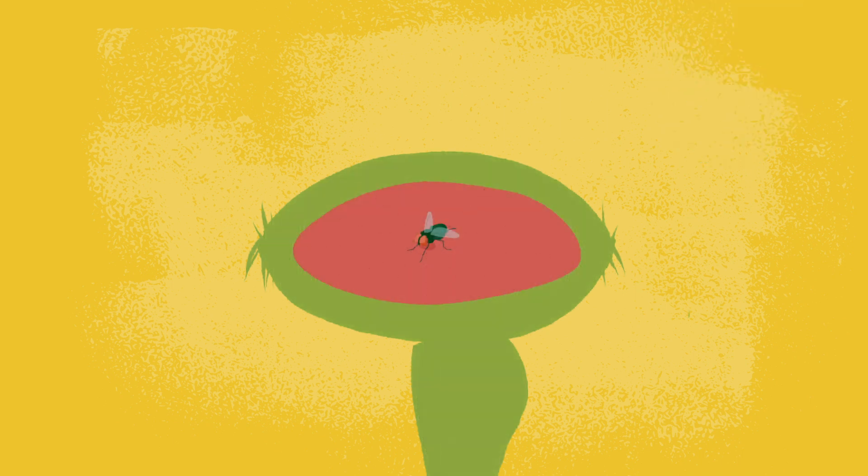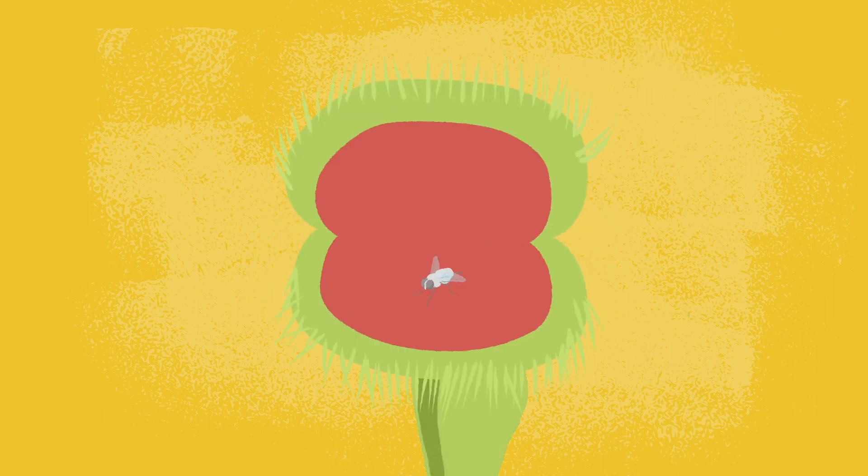Depending on the size, it can take 4 to 10 days for the prey to be digested. When finished, the lobes open. Wind, rain, or another bug remove the exoskeleton and the snare is reset. Any trap that is open is ready to eat.